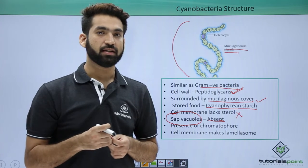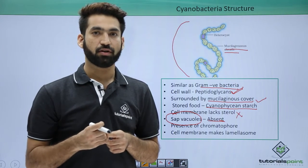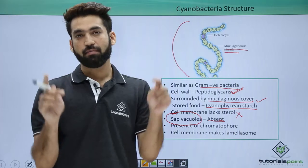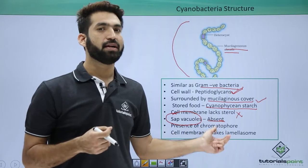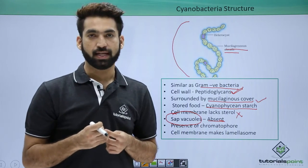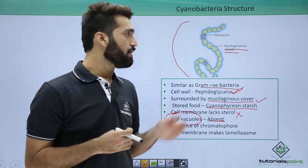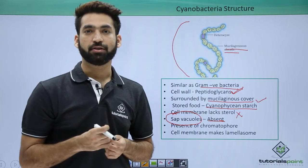I've told you in kingdom Monera, when I was teaching you the structure of bacteria, that the cell membrane makes mesosomes. Here, the cell membrane makes lamellosomes. The function is all the same. In the next session, we'll be seeing how cyanobacteria performs nitrogen fixation.